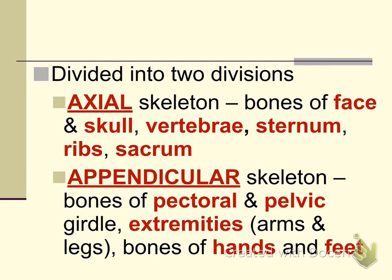The appendicular skeleton includes all the bones that make up the pectoral and the pelvic girdle, all of the bones that make up the extremities which are your arms and legs, and also bones in the hands and feet.